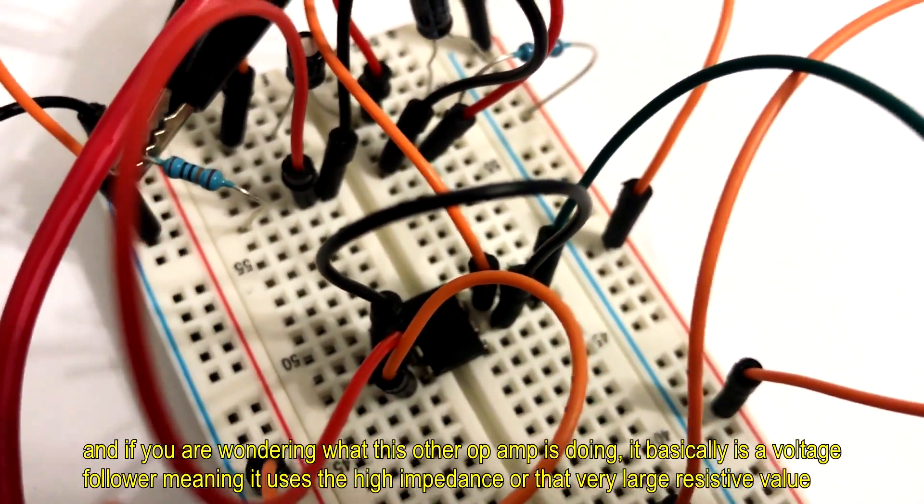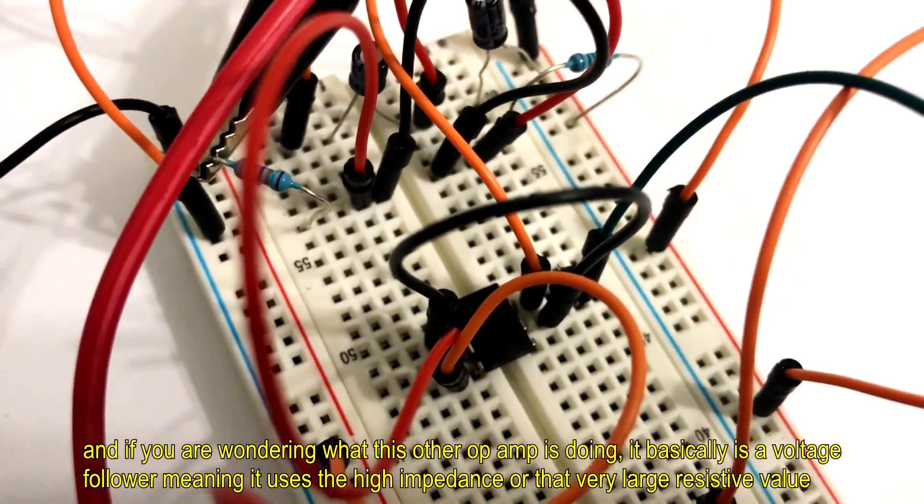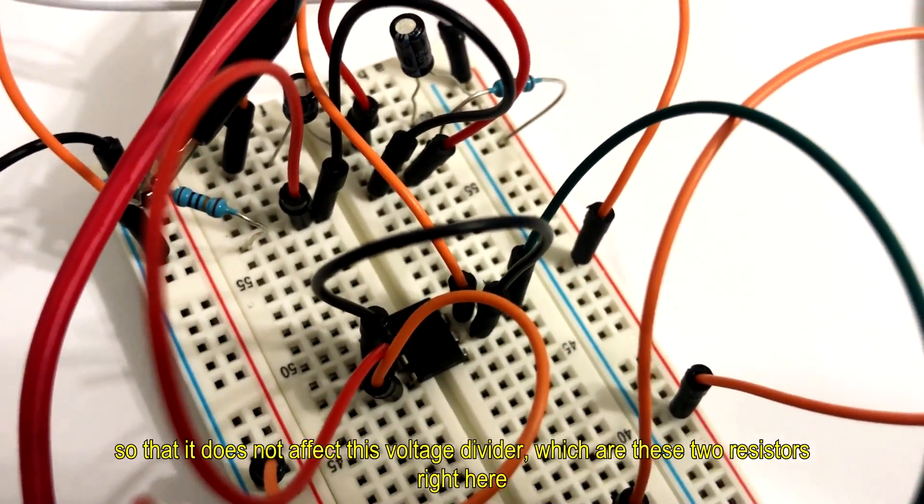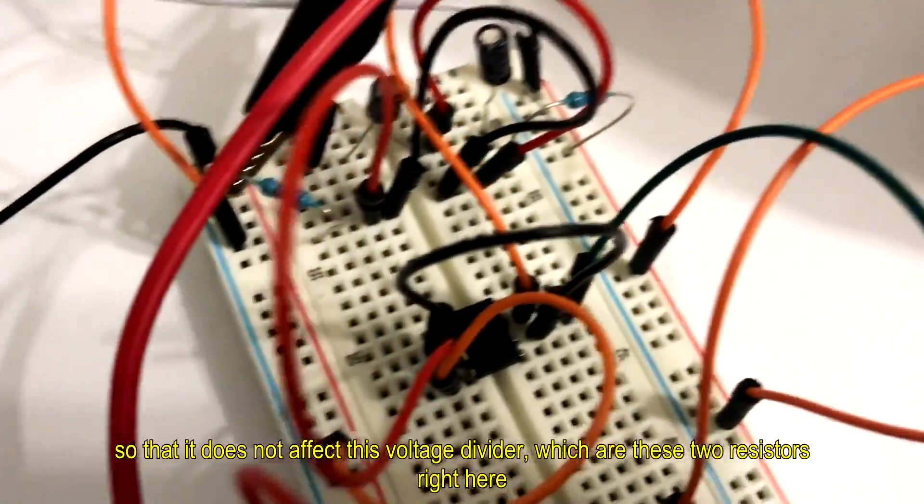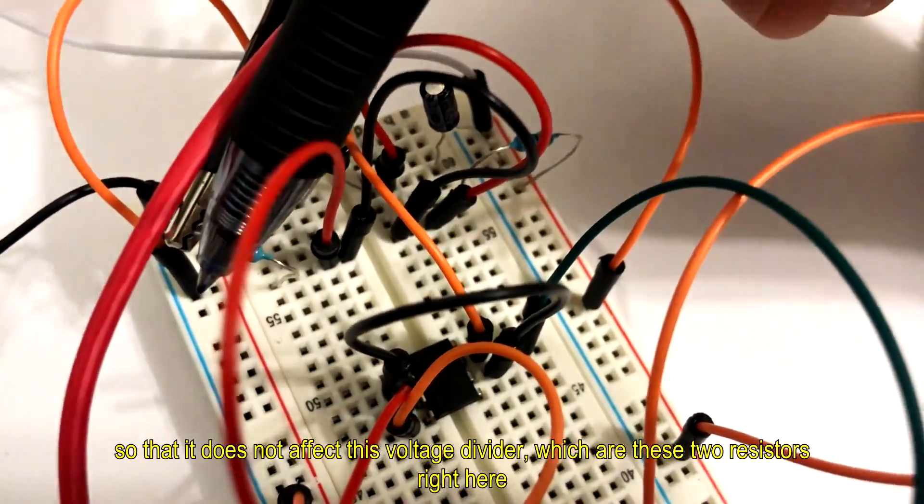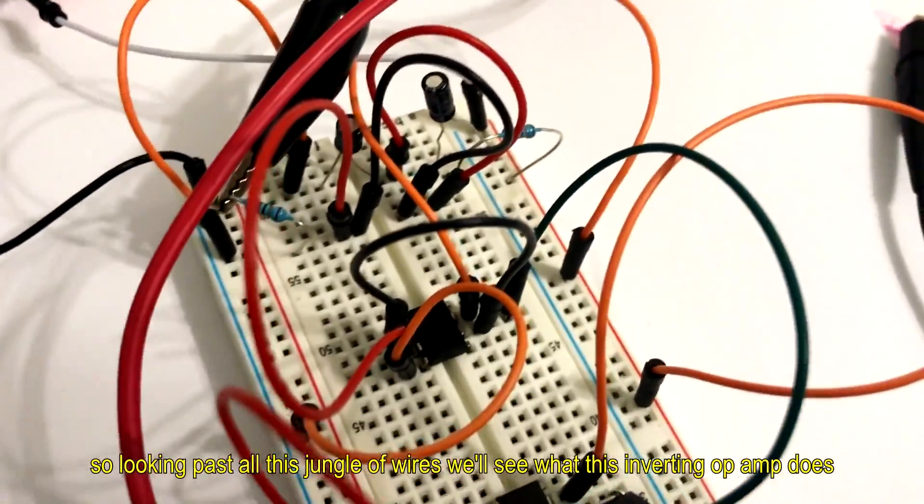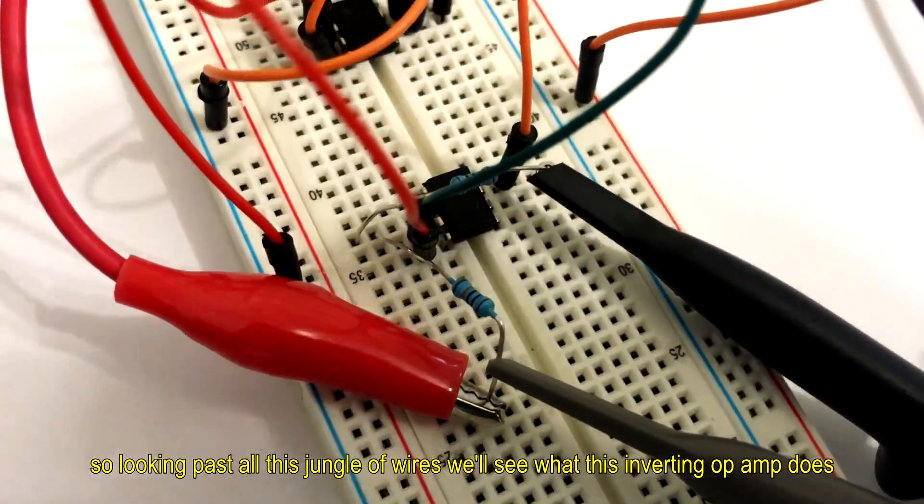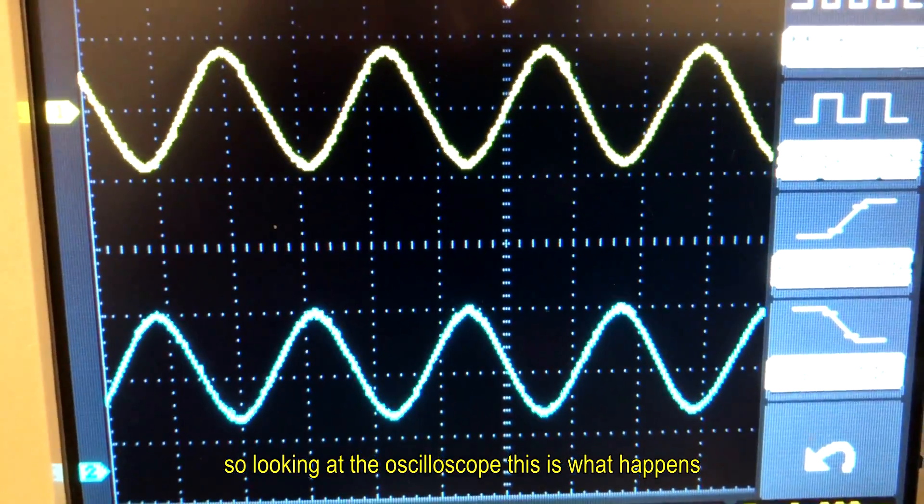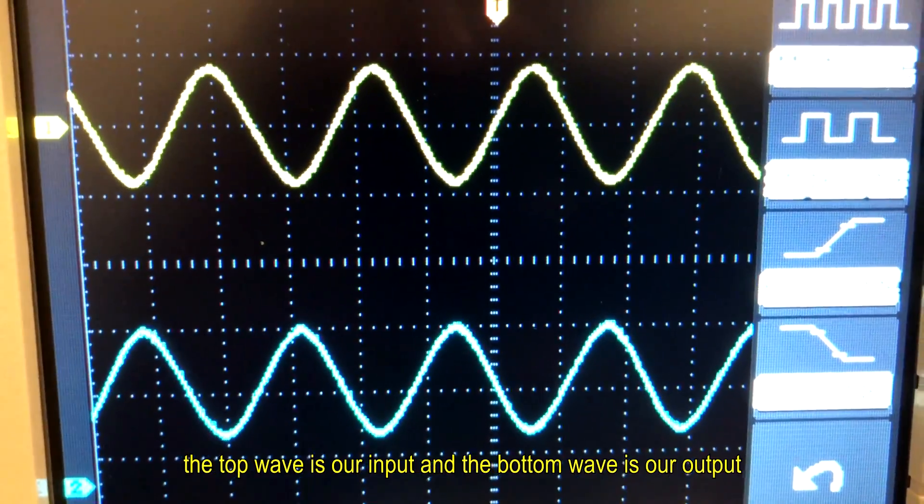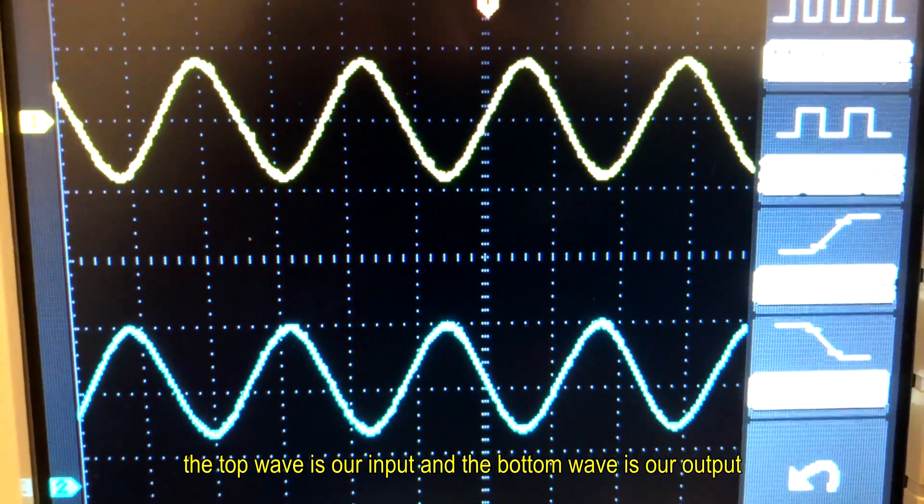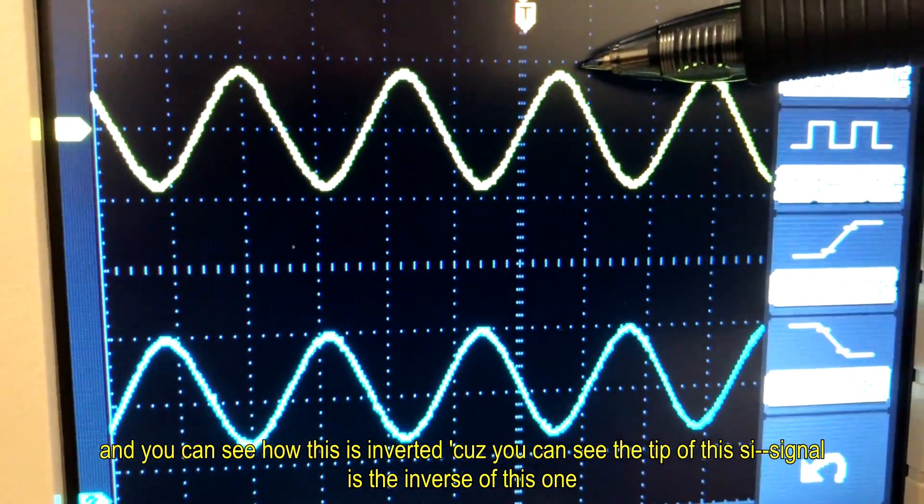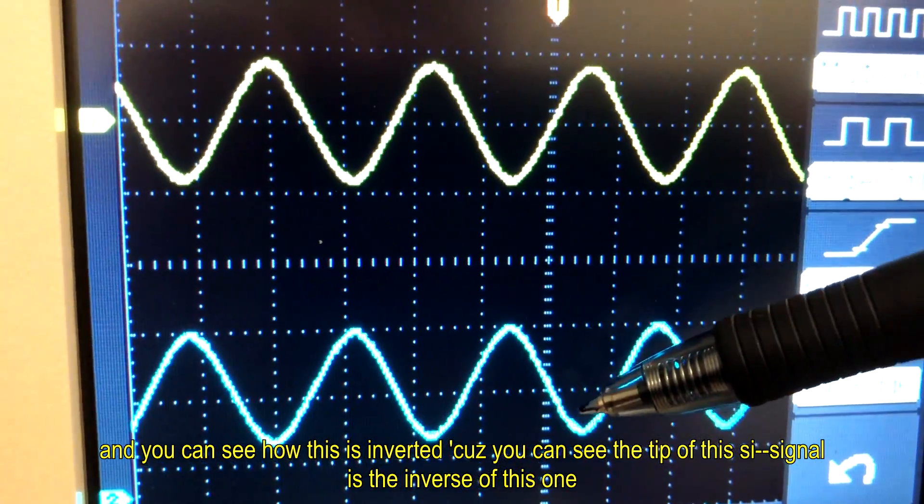And if you're wondering what this other op-amp is doing, it basically is a voltage follower, meaning it uses the high impedance or that very large resistive value so that it does not affect this voltage divider which are these two resistors right here. So looking at the oscilloscope, the top wave is our input and the bottom wave is our output.